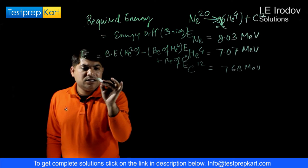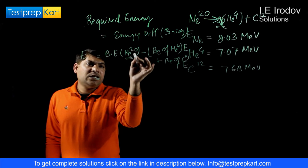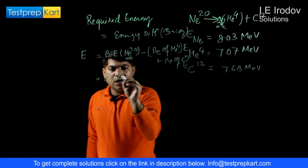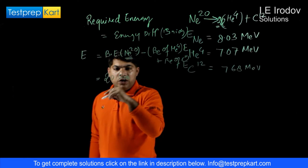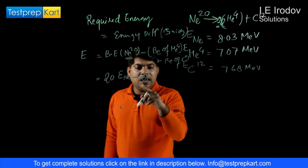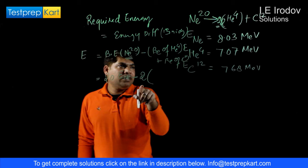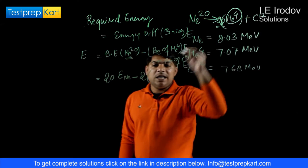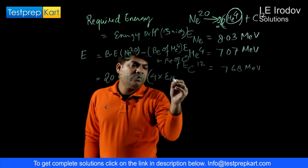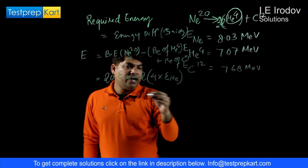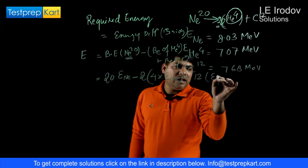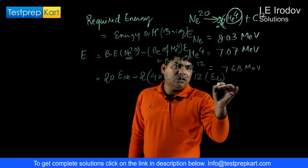We need to write it as 20 nucleons in Neon. So this is 20 times energy per nucleon for Neon, minus - there are 2 alpha particles, there are 4 nucleons because this is He-4 - so we can write 2 times 4 into energy of helium per nucleon, minus there are 12 nucleons in Carbon, so 12 times energy of Carbon.